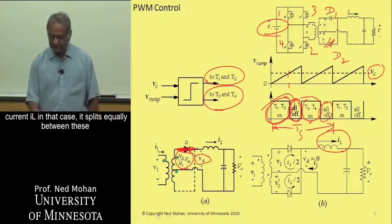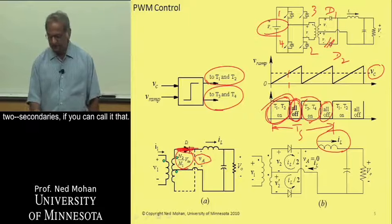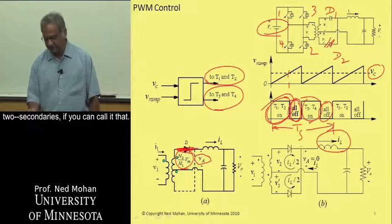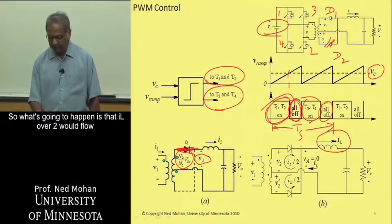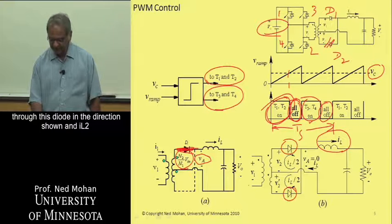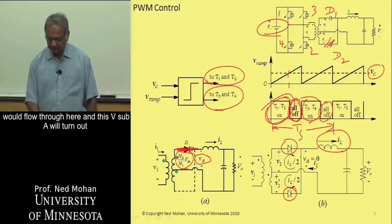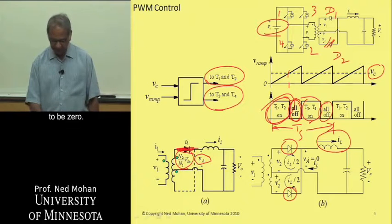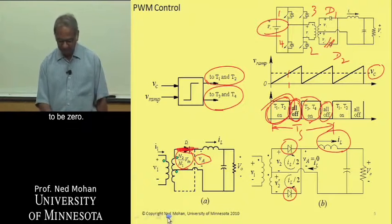In that case, it splits equally between these two secondaries, if you can call it that. So what's going to happen is that IL over 2 would flow through this diode in the direction shown, and IL2 would flow through here, and this V sub A will turn out to be 0.